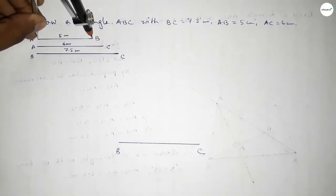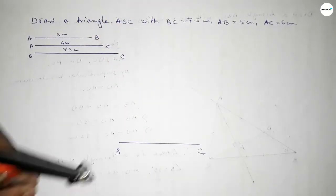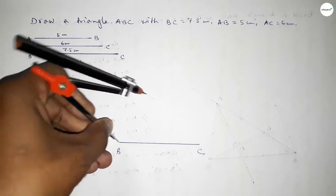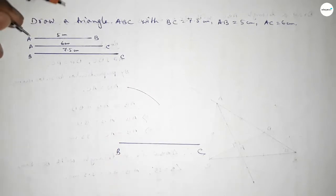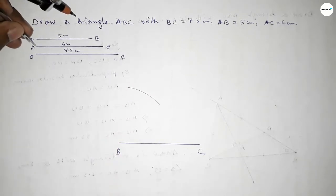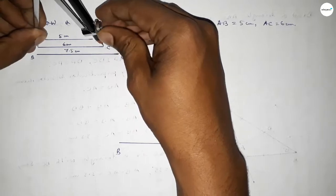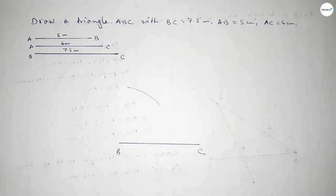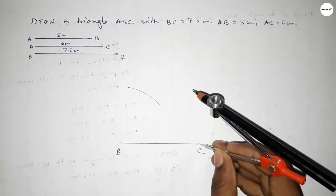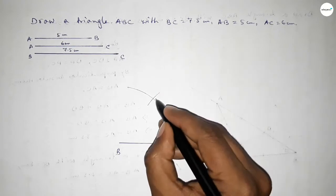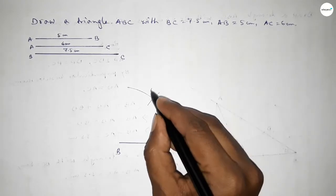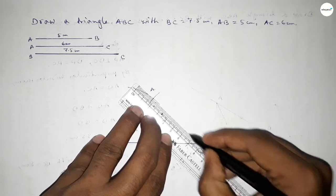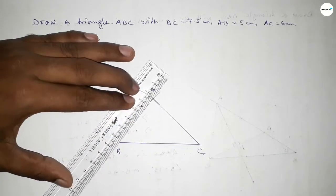Now taking the length AB equal to 5 centimeters by using compass and putting the compass on the point B and drawing an arc here. Then taking the length AC equal to 6 centimeters by using compass and putting the compass on the point C and cutting here. So both the curves intersect at point A.